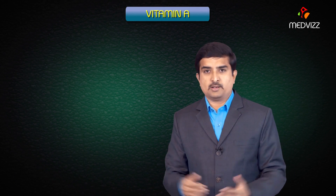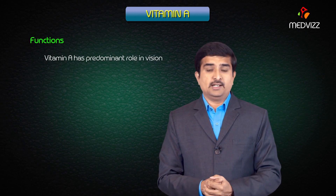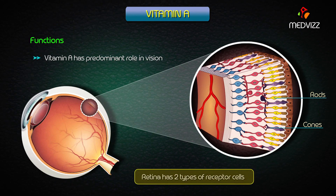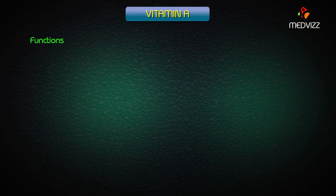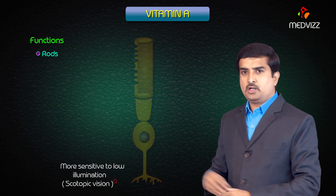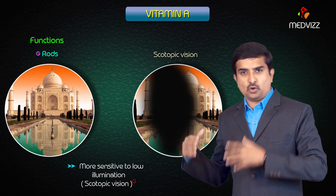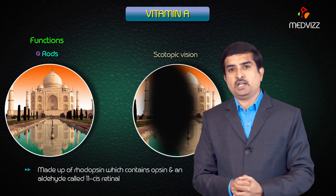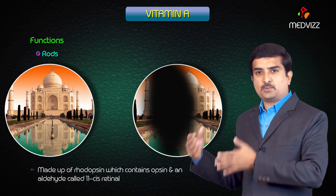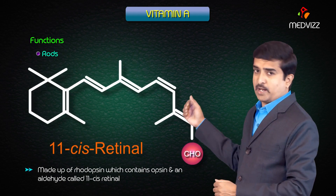The predominant role of vitamin A is in vision. The retina has two types of receptor cells: rods and cones. Rods are more sensitive to low illumination, which is called scotopic vision. Rods are made up of a conjugated protein called rhodopsin, which contains opsin and an aldehyde called 11-cis retinal, which is the vitamin A aldehyde form.